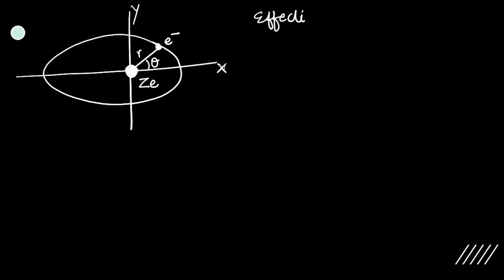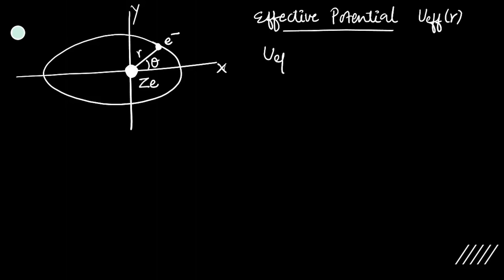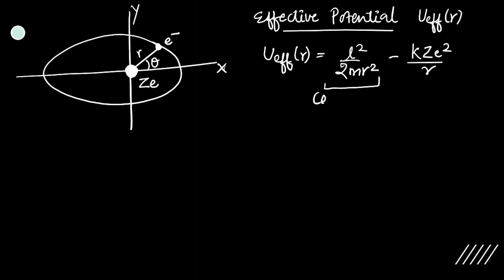First we have to write the effective potential. The effective potential has two terms: first is the centrifugal term, which is L² / (2mR²), and the other is the attractive nuclear potential, which is KZe² / R.